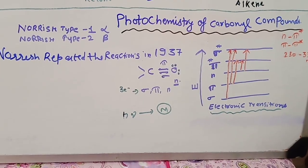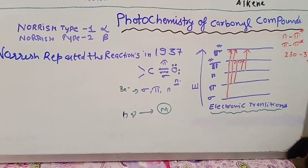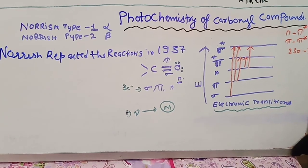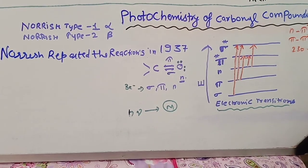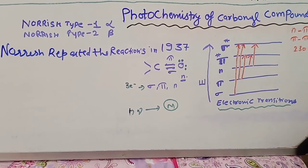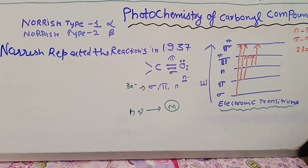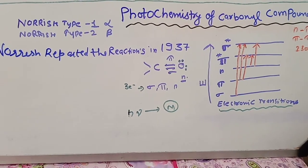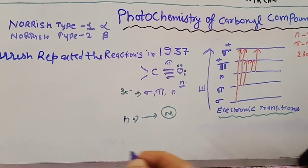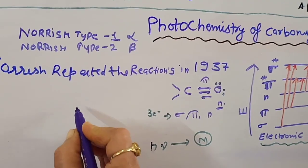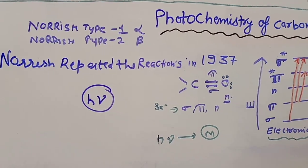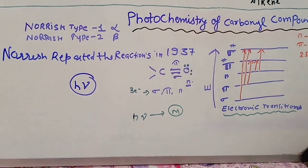Today I am going to explain the photochemistry of carbonyl compounds. There are many types of photochemical reactions. Photochemical reactions are reactions which take place in the presence of light.